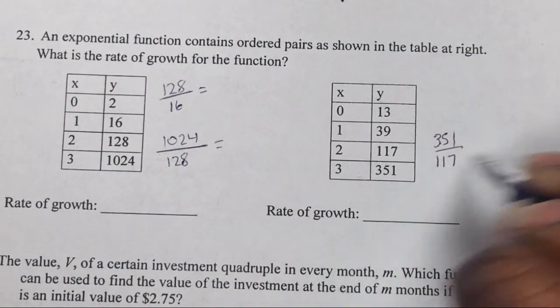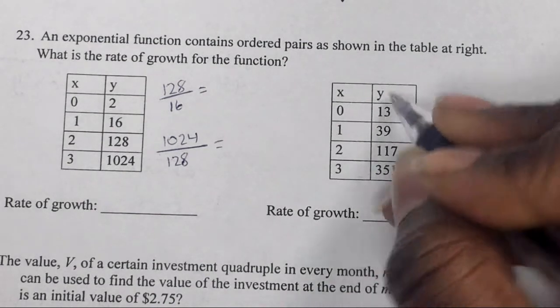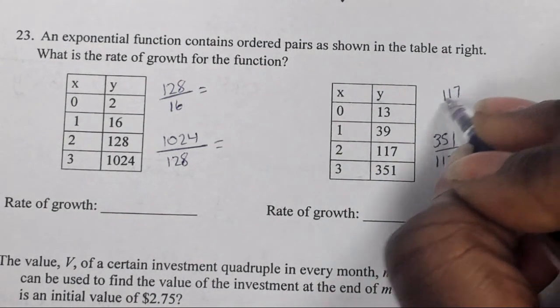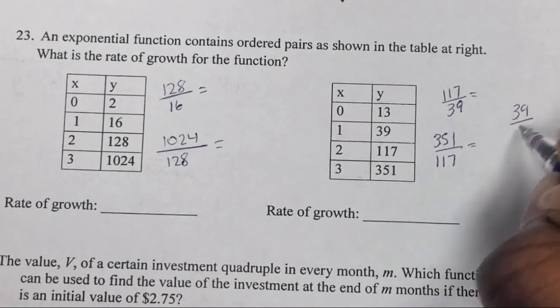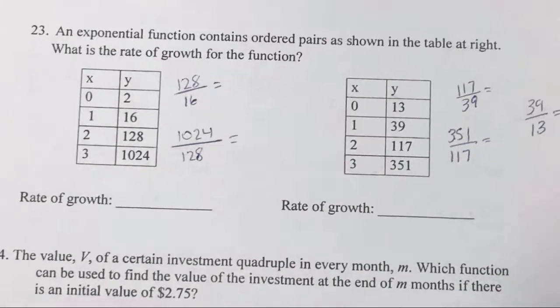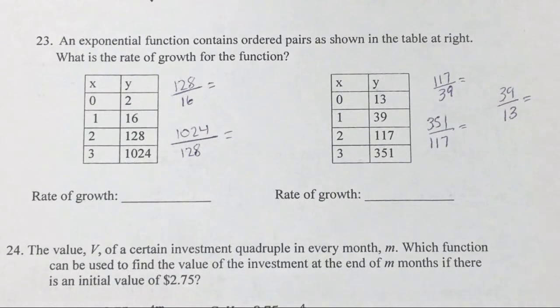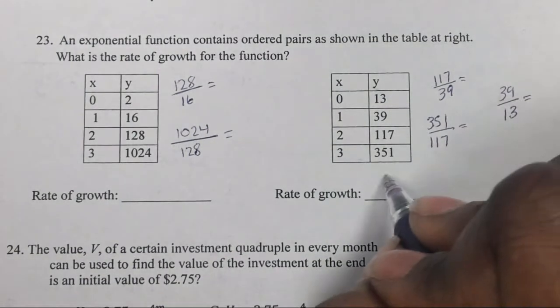And then over here 351 divided by 117, because you start at the bottom, you climb up the ladder. 117 divided by 39, or you can even take 39 divided by 13. So if you just divide it, you should get the same number each time.